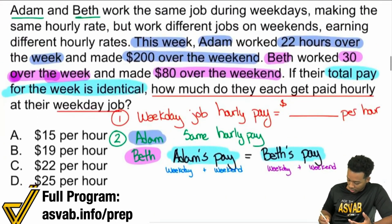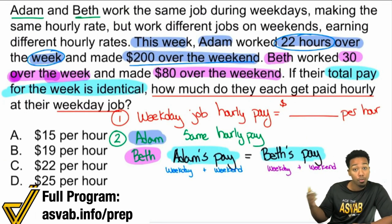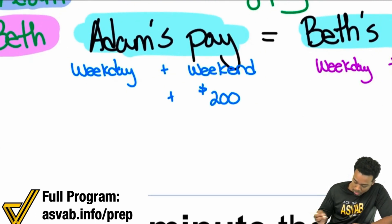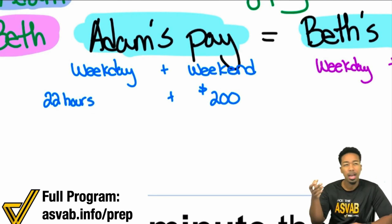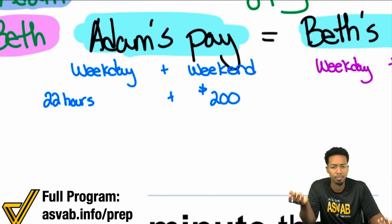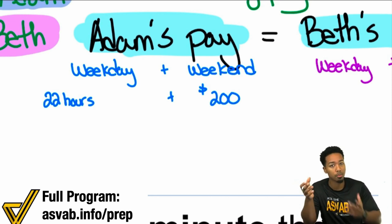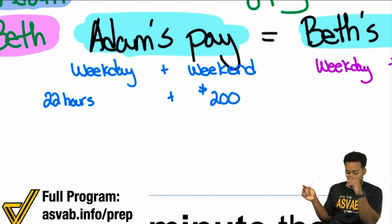For Adam, I'm going to add in all the information. Adam worked 22 hours over the week and the extra $200 over the weekend. So the weekend was $200 for Adam, and the weekday was 22 hours. But that doesn't make sense — how can we add hours with money? Here's the thing: how do you determine how much you get paid with your hourly job? If I make 10 bucks an hour and I do one hour, that's $10. Two hours, that's $20. Three hours, that's $30. I'm multiplying — the number of hours times the hourly wage.